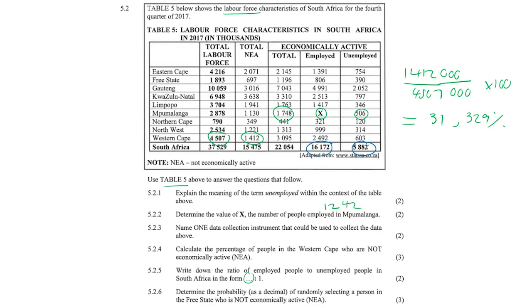The ratio is 16172 to 5882. We need a 1 on the right-hand side, so we divide both sides by 5882. Therefore the left-hand side gives us 2.7494, making the ratio 2.7494 to 1.